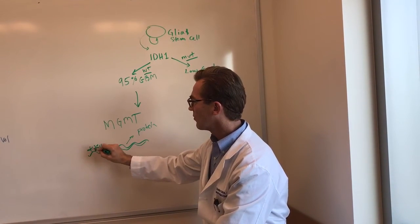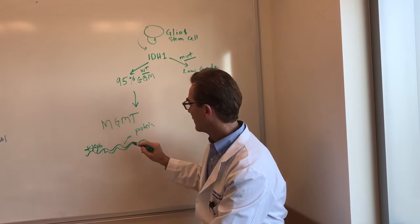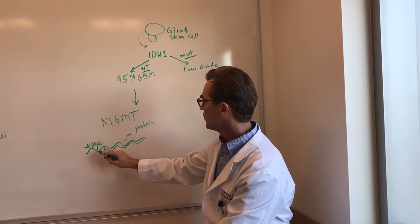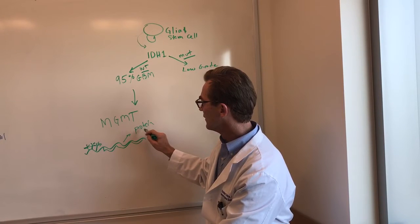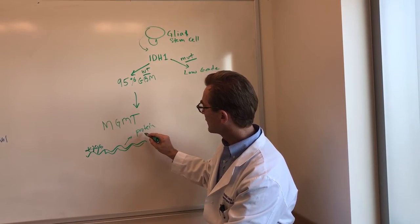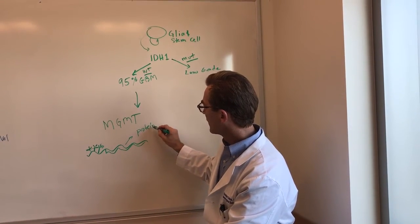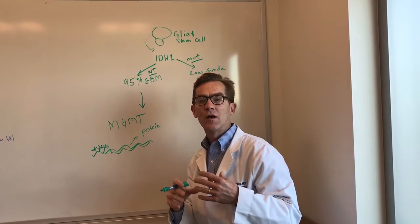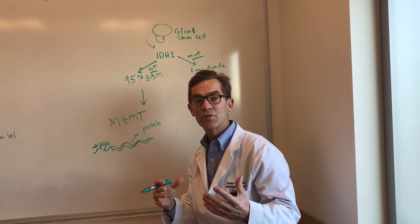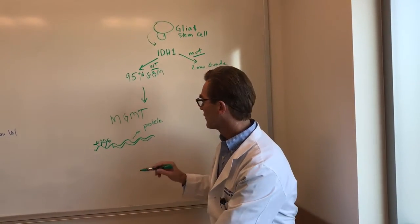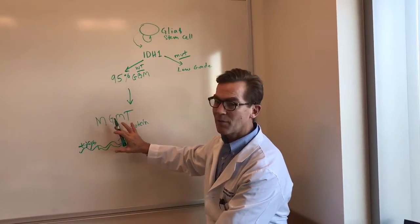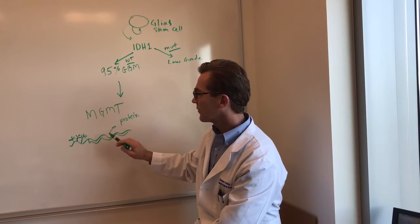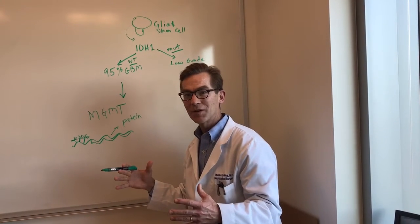And if that happens, that blocks the ability of this gene to be made into a protein. That's the so-called methylated MGMT. So if you have a methylated MGMT promoter, you will not be able to make the protein, and that protein is involved in getting rid of the effects of a chemotherapy drug called Temadar. So it's quite complicated, but the bottom line is that if you have methylated MGMT, you don't make that protein, so the chemo actually works better.